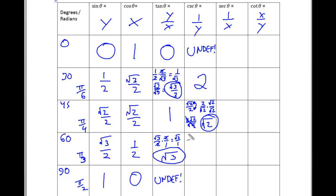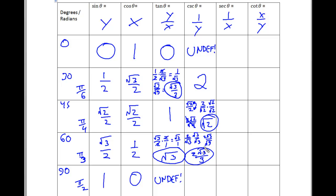For the cosecant of 60 degrees, we take square root of 3 over 2 and flip it on its head. Multiply top and bottom by square root of 3 over square root of 3. This gives 2 square roots of 3 over square root of 9, and simplifying the denominator gives 2 square root of 3 over 3. That's the cosecant of 60 degrees. Flipping 1 on its head is just 1.